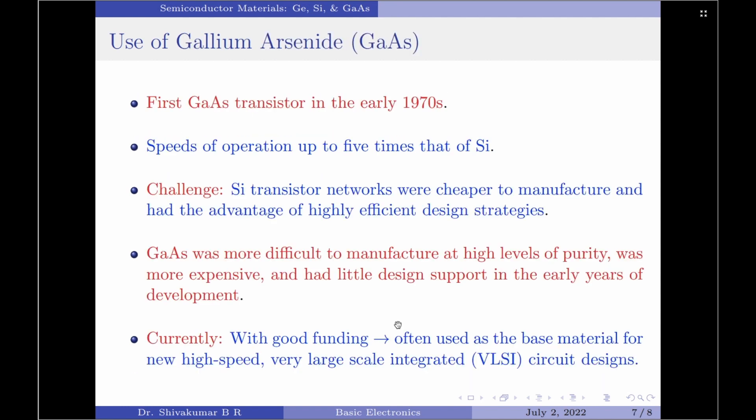The result was the development of the first gallium arsenide transistor in the early 1970s. This new transistor made from gallium arsenide had speeds of operation up to five times that of silicon.